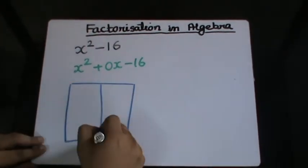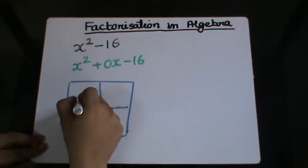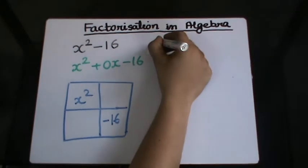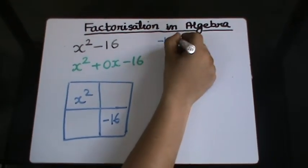I'll have x² in the first box and -16 in the last box. Now I'm going to factorize -16.